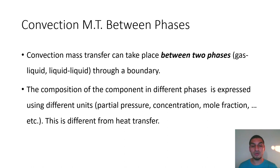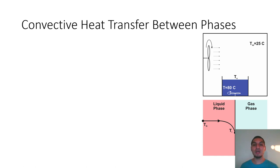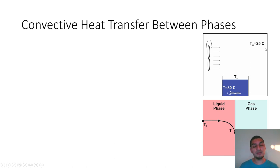Despite having many advantages when dealing with different phases, there are challenges we will face. The main challenge is related to the units of concentration. To understand this, let me give an example with a familiar system — convective heat transfer. Consider a cup of water at 80°C, well-mixed, with convective heat transfer, inside a room kept at 25°C with a fan providing turbulence.